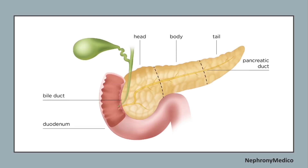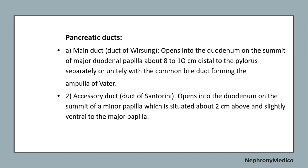This is another picture showing the parts of the pancreas. Regarding pancreatic ducts: the main duct is known as the duct of Wirsung and the accessory duct is known as the duct of Santorini. The main duct opens into the duodenum on the summit of the major duodenal papilla, and the accessory duct opens into the duodenum on the summit of the minor papilla.